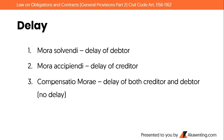The fourth breach — contravention of the terms of the obligation — will also be discussed further in the next video. For now, remember: if a breach does not fall under the first three (fraud, negligence, or delay), it falls under contravention of the terms of the obligation.